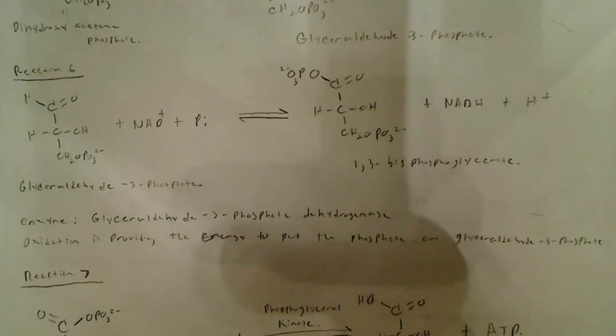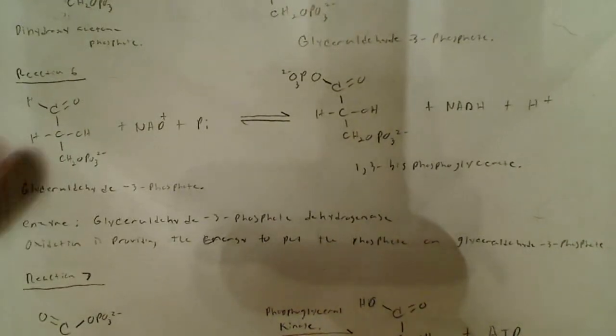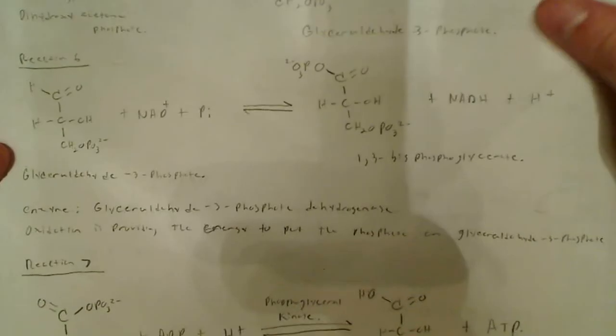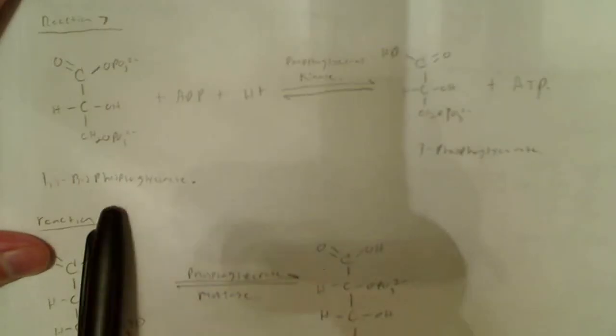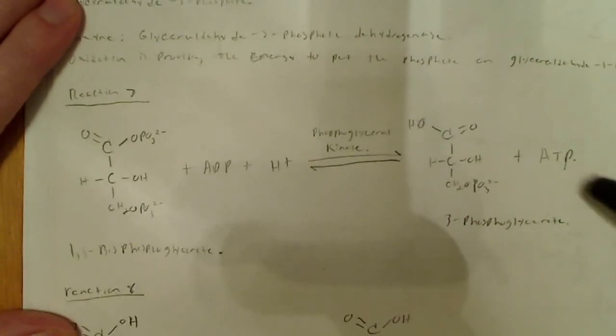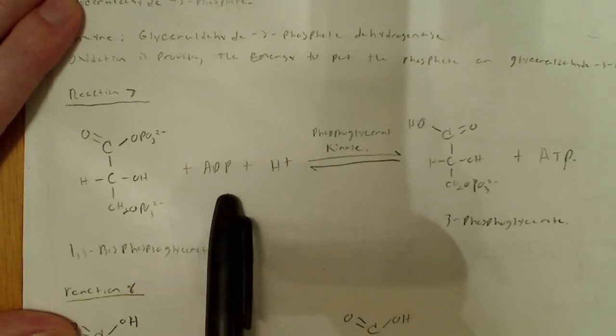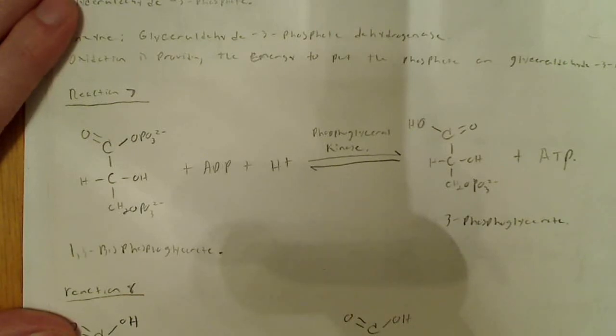Glyceraldehyde-3-phosphate is being oxidized; NAD+ is being reduced. Reaction 7: 1,3-bisphosphoglycerate plus ADP goes to 3-phosphoglycerate plus ATP — we're phosphorylating ADP to make ATP. The enzyme is phosphoglycerate kinase.